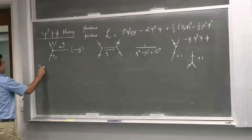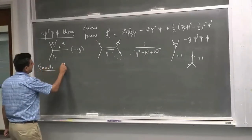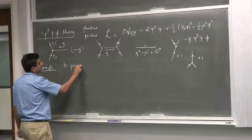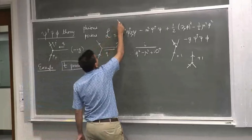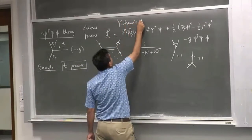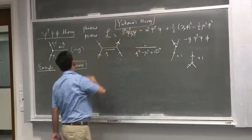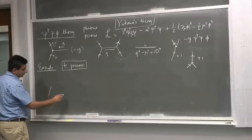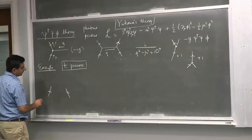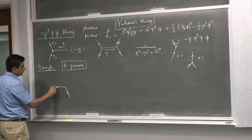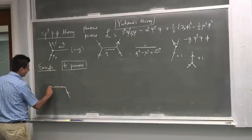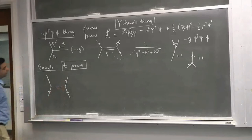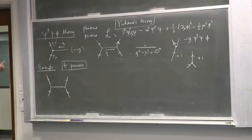Let me give an example — a so-called T-process in this theory, also called Yukawa theory. In a T-process, we have two incoming ψ-ons that interact through the exchange of a φ-on. There is no arrow on the φ-on line because q for this φ-on is zero. Then we have an outgoing ψ-on and an outgoing ψ-on.